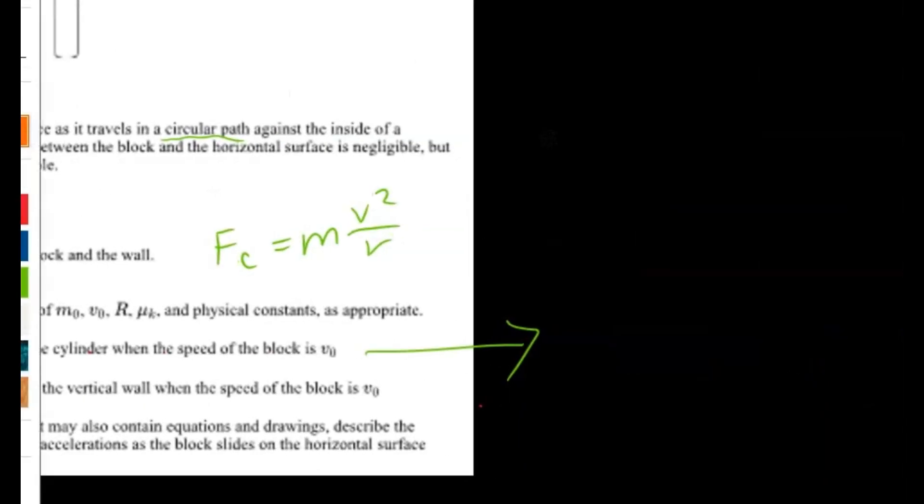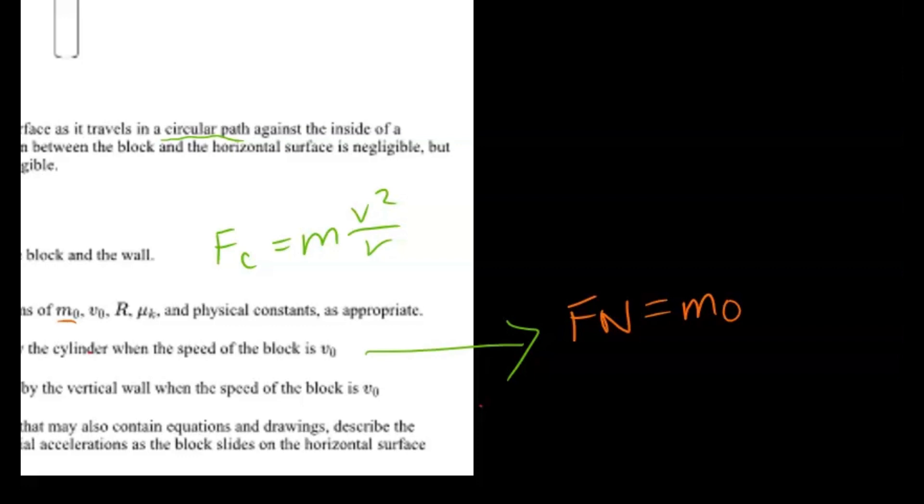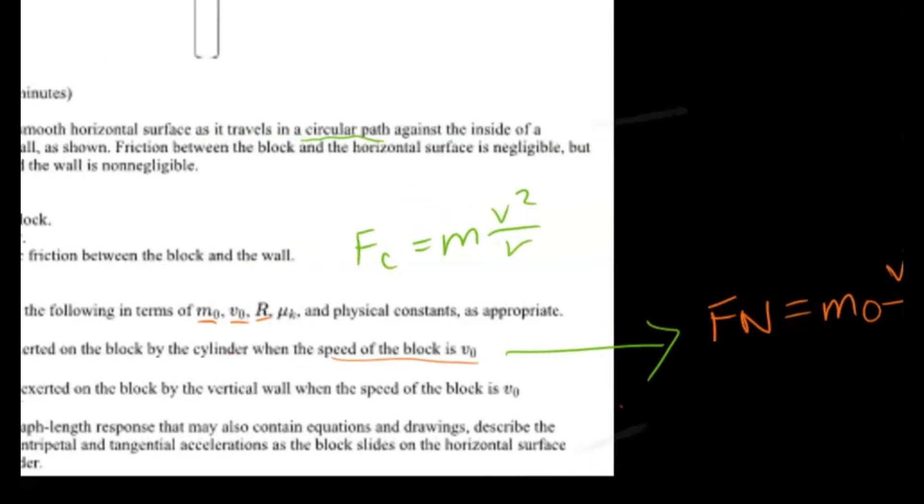I'll do this to the side. Force normal, let's use orange. So force normal will be equivalent to mass, which they want us to write as mo, and velocity squared, so they want us to write velocity as vo, or the speed of the block when it's vo. So vo squared, and then the radius is just r. So that's all you have to do for that part.